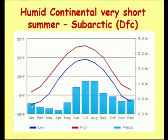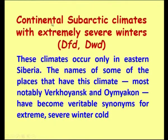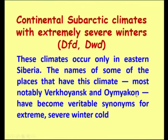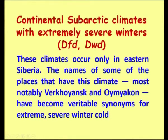The temperature goes on decreasing while the rainfall somewhat maintains. The next variety is the continental subarctic with extremely severe winters. These climates occur only in Eastern Siberia. The names of some places with this climate, most notably Verkhoyansk and Oymyakon, have become synonyms for extreme severe winter cold. Verkhoyansk is the coldest region in the world. Therefore, it is an extremely severe winter and subarctic climate.